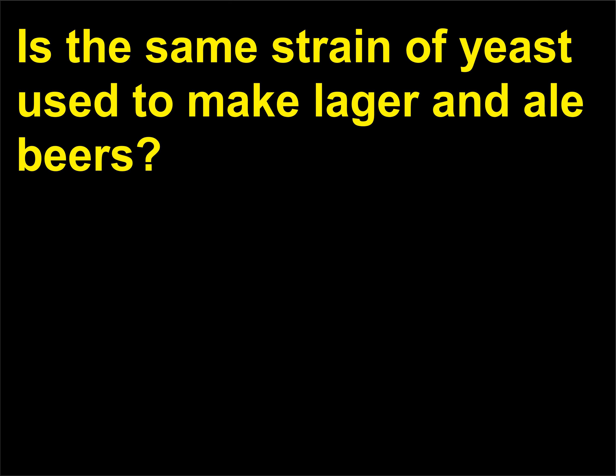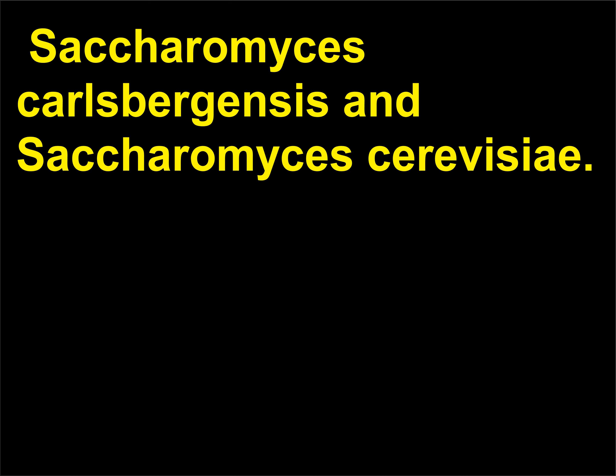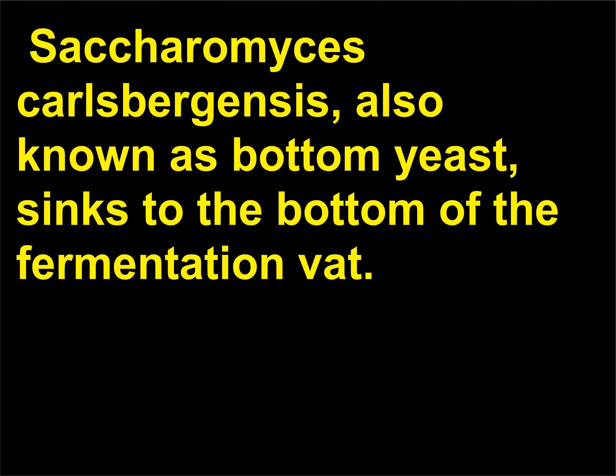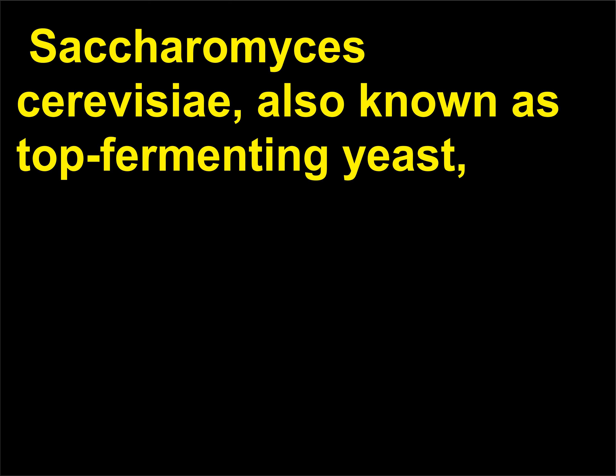Is the same strain of yeast used to make lager and ale beers? Two common strains of yeast are used to ferment beer: Saccharomyces carlsbergensis and Saccharomyces cerevisiae. Saccharomyces carlsbergensis, also known as bottom yeast, sinks to the bottom of the fermentation vat. Strains of bottom yeast ferment best at 42.8 to 53.6 degrees Fahrenheit (6 to 12 degrees Celsius) and take 8 to 14 days to produce lager beer.